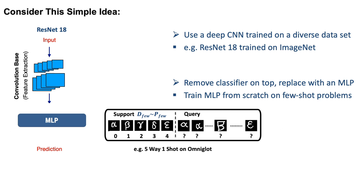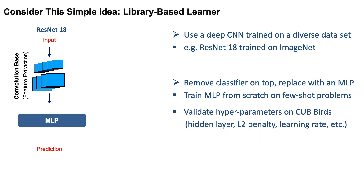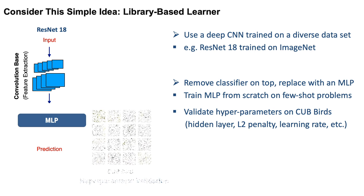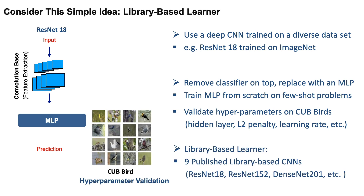We train this MLP from scratch on few-shot problems and perform hyperparameter validation on an external dataset such as CUB-Birds. And that's it. That's the method we call library-based learner, because we are using the published library-based CNN directly. In our case, there are nine different variants of ResNet and DenseNet.